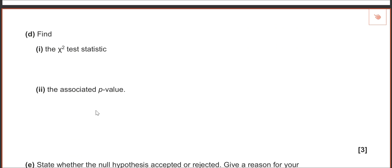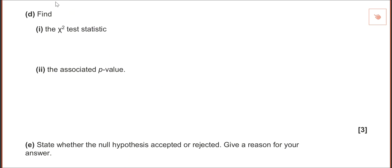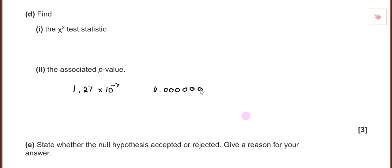The only thing you did wrong was your interpretation of the p-value. You had 1.27 times ten to the power of negative seven — but that is actually 0.000000127. You got confused because you read the calculator notation 'E negative 7' as 1.27 rather than the very small decimal. That led you to the wrong conclusion: because p was actually less than the significance level, you should have rejected the null hypothesis, not accepted it.